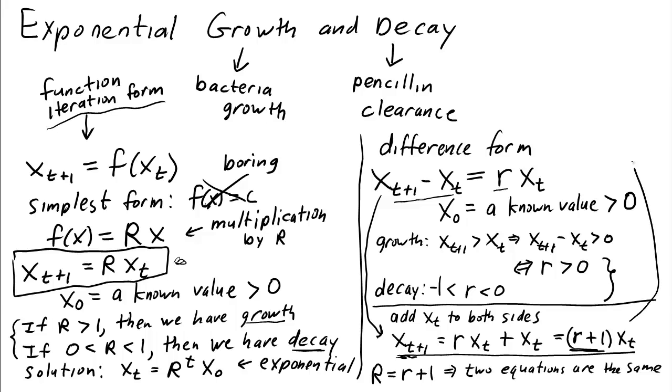And in fact, we can see that the solution for this side is x_t equals (r+1) to the power of t times our initial conditions, which is again the same as the solution right here if you replace little r plus 1 with big R.